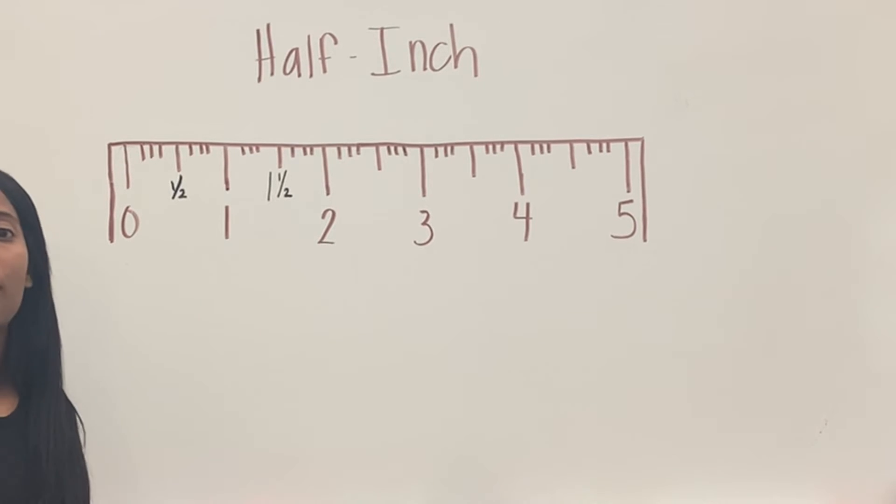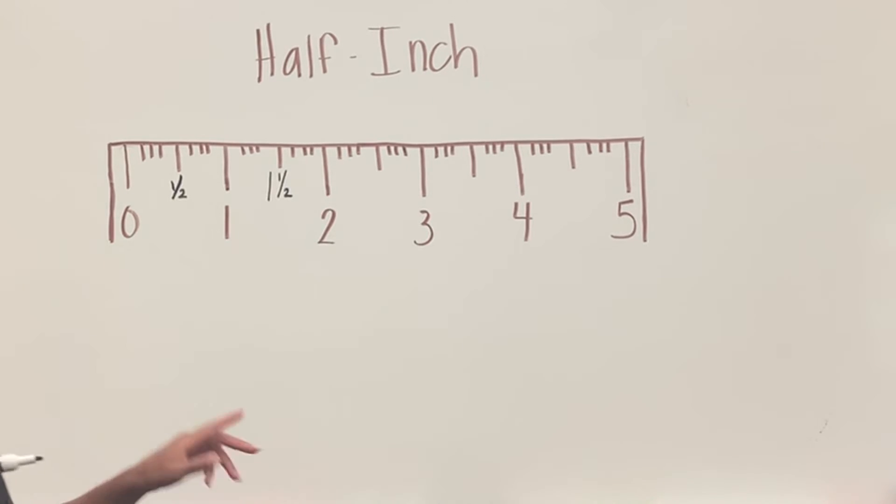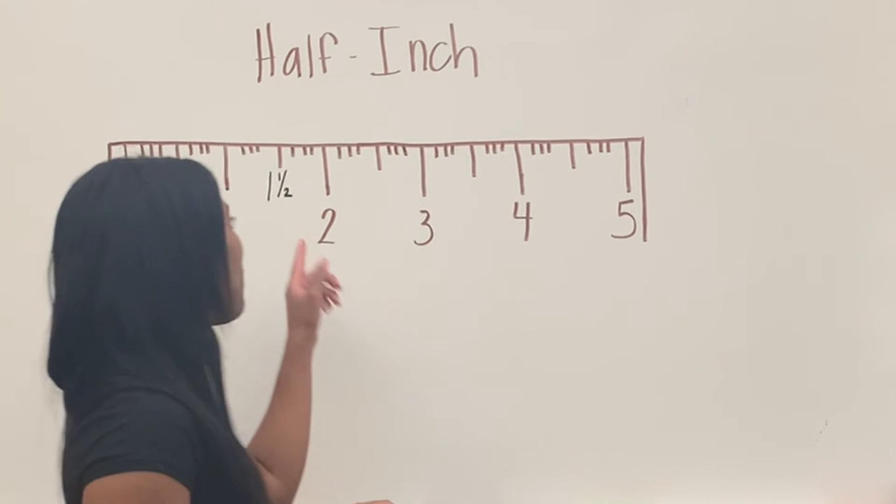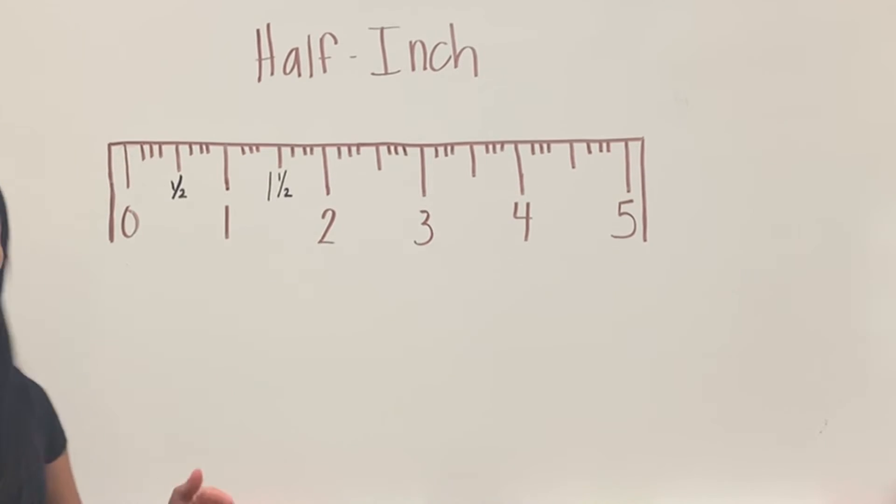So whenever you measure your lines, you do have an extra worksheet, 72, where you measure some lines. Some of them will stop in the middle, and that middle is called the half inch, and this is how you write it.